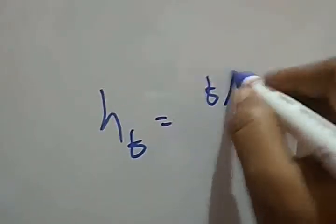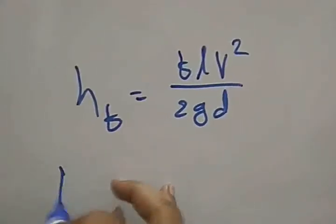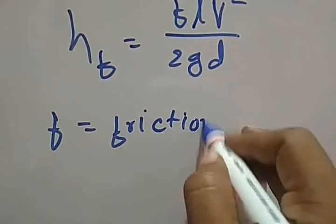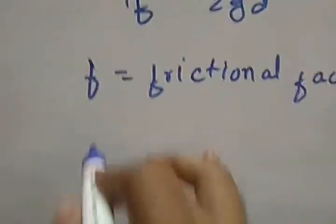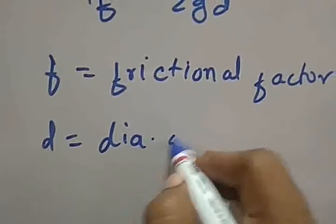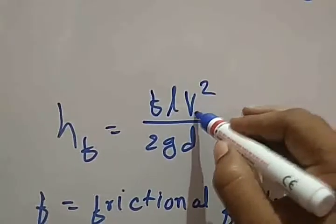Due to the friction, there is always a loss of head. This loss of head due to friction can be found out by using Darcy's-Weisbach equation: HF is equal to FLV² upon 2GD, where F is the frictional factor and D is the diameter of pipe. V is the velocity of flow.